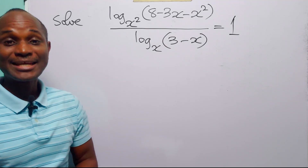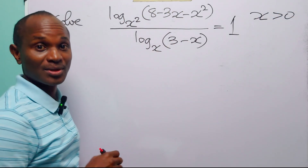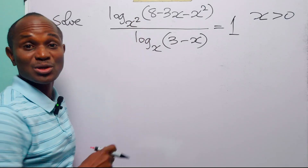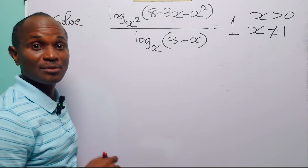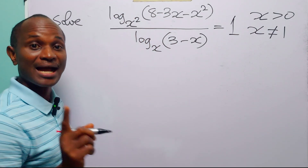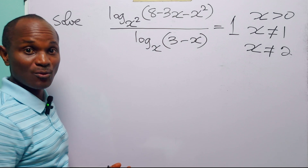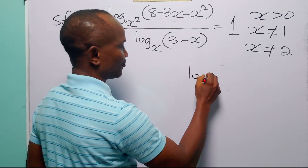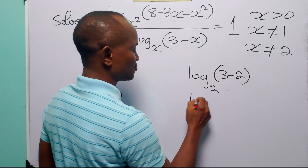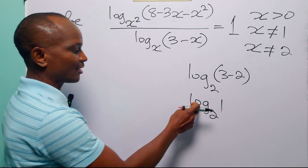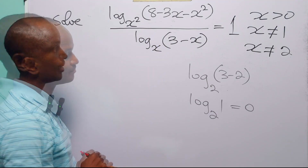Hello and welcome. For this logarithmic equation to be defined, we know that x must be greater than zero because the base of a logarithm must be positive. We also know that x must not be equal to one because one cannot be the base of a logarithm. Finally, x must not be equal to two, because when x equals two the denominator becomes log base two of one, which equals zero, and we cannot divide by zero.